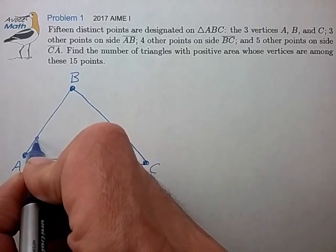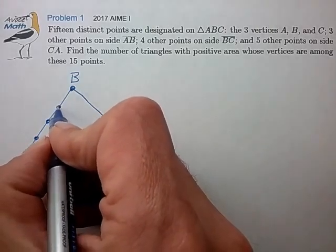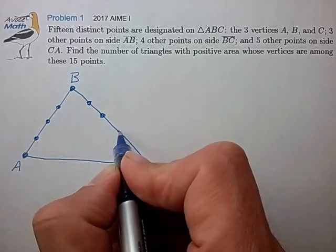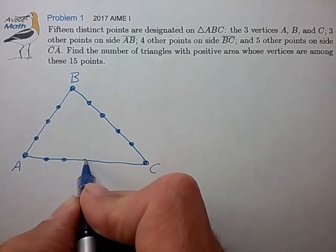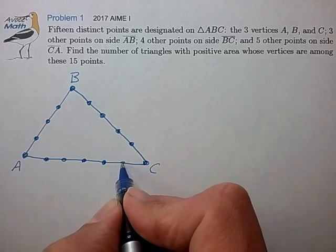We have three extra points on side AB, four extra points on side BC, and five extra points on side AC.